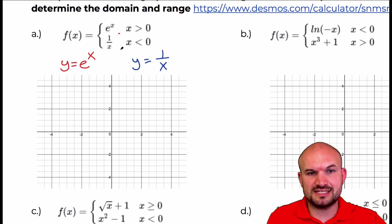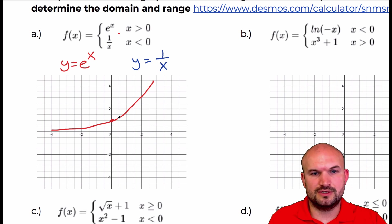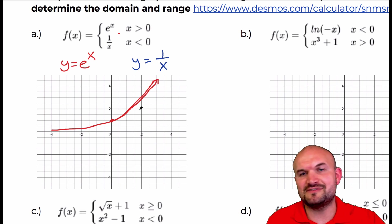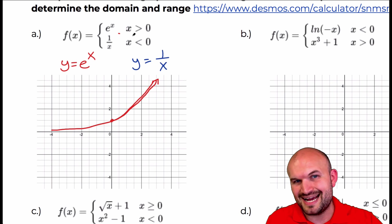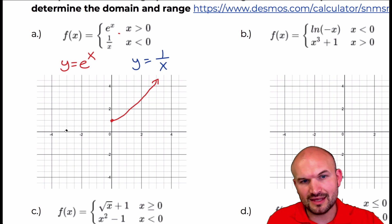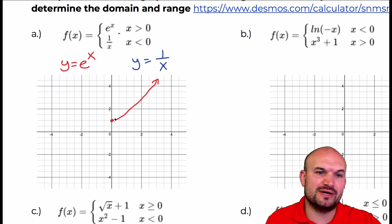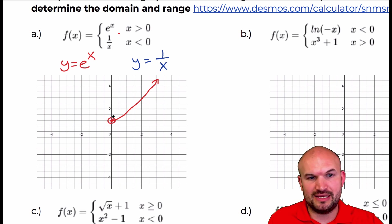For y equals e to the x, that graph is going to intercept at (0, 1) and it's going to look like this. We're only going to graph it when x is greater than 0, so anything to the left I am not going to graph. And since x is not equal to 0, that's going to be a hole.